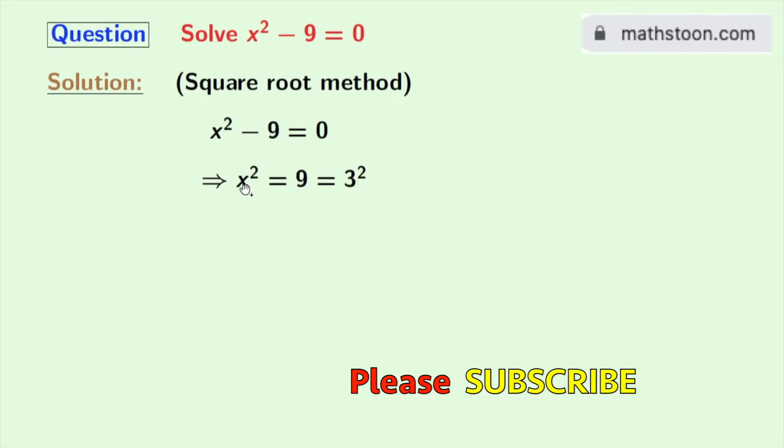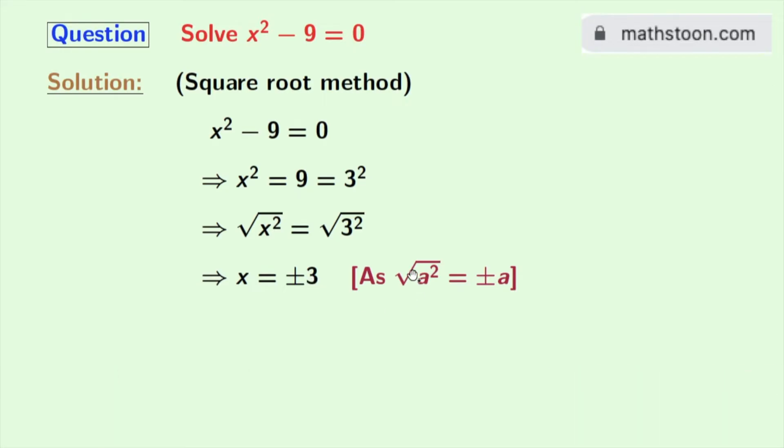Now if we take square root on both sides, we get √(x²) = √(3²). Solving this, we get x = ±3, as we know that √(a²) = ±a.